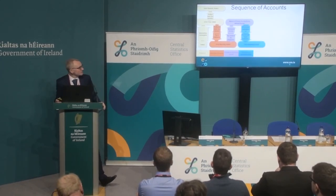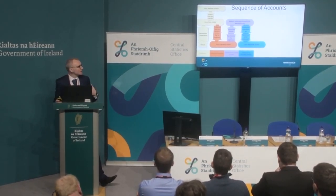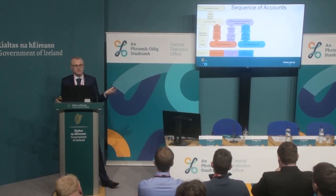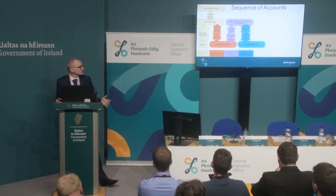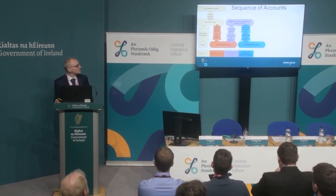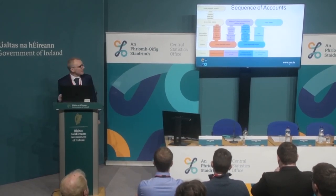Then you have the secondary distribution of income. Households pay income tax, corporations pay corporation tax, government takes all that in. Households pay pension contributions, they pay PRSI, and that gets paid out to pensioners and those in receipt of child benefit and so on. And then you're left with the gross disposable income, which is an important indicator for households. Then you have final consumption — only households, governments, and non-profits pay final consumption — and that leaves you with your gross saving.